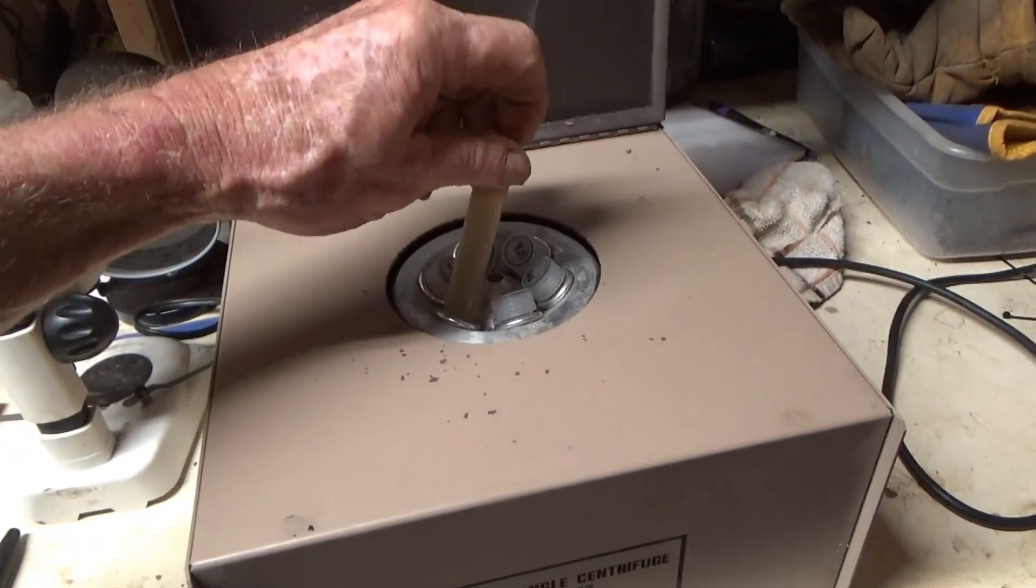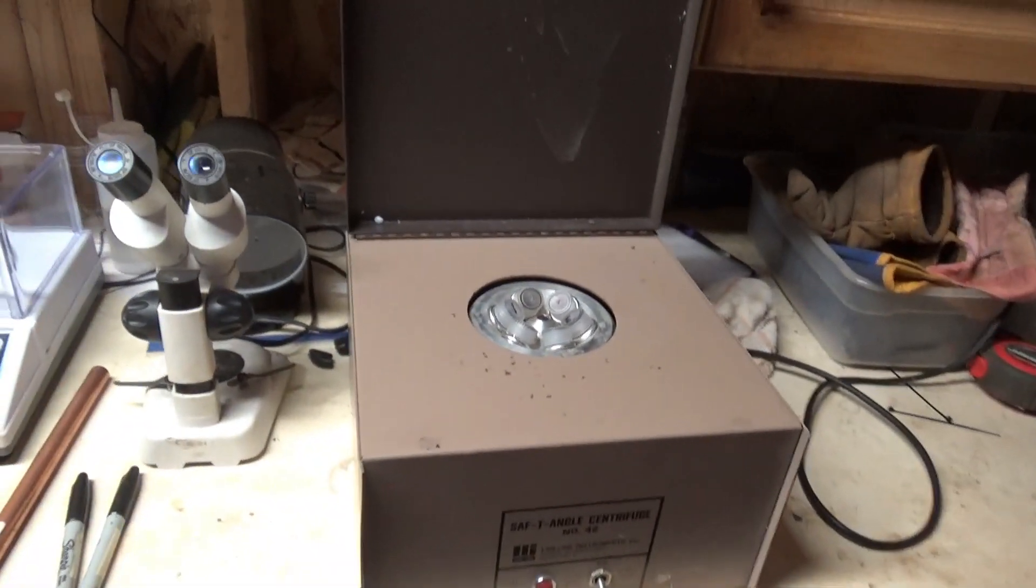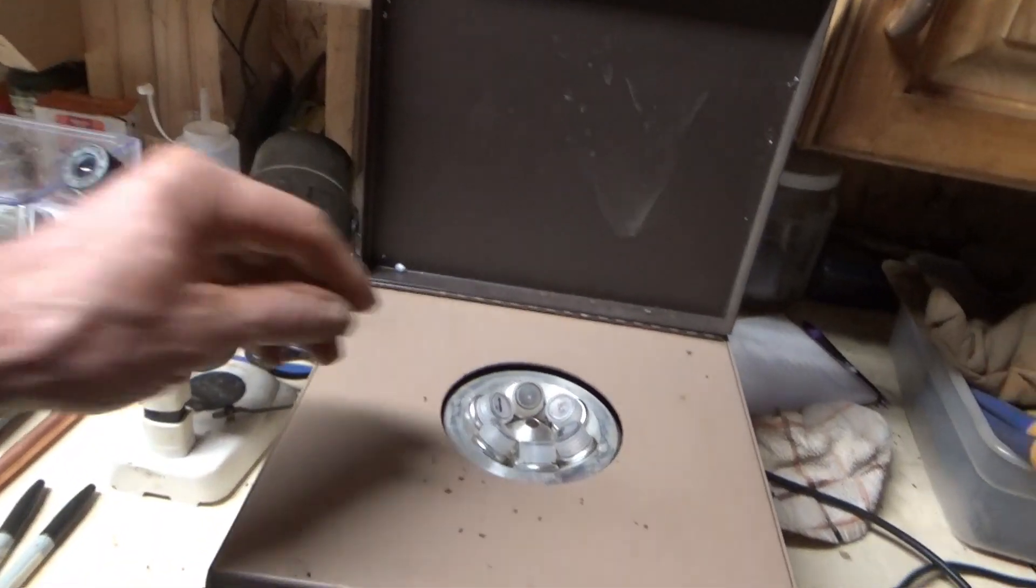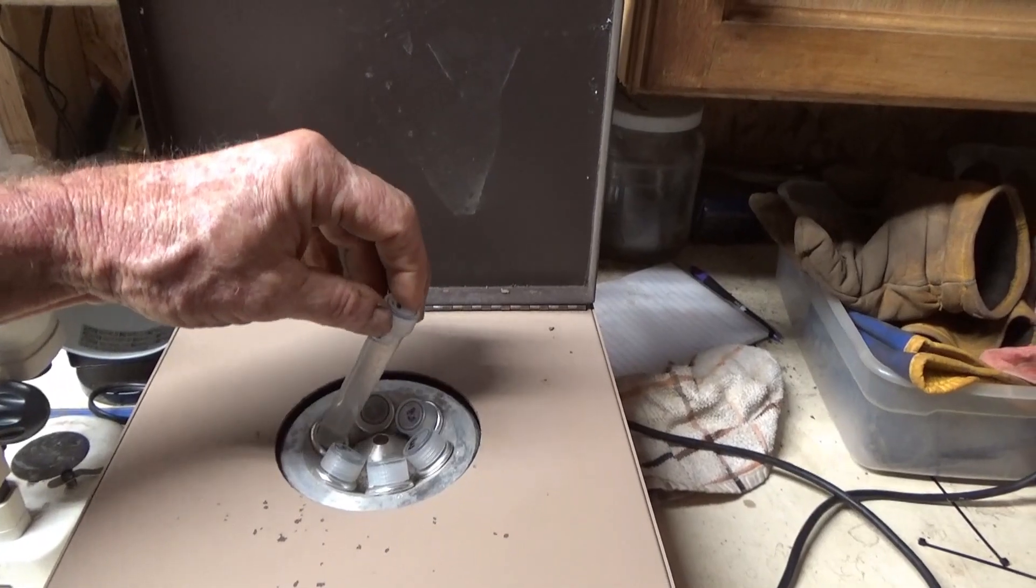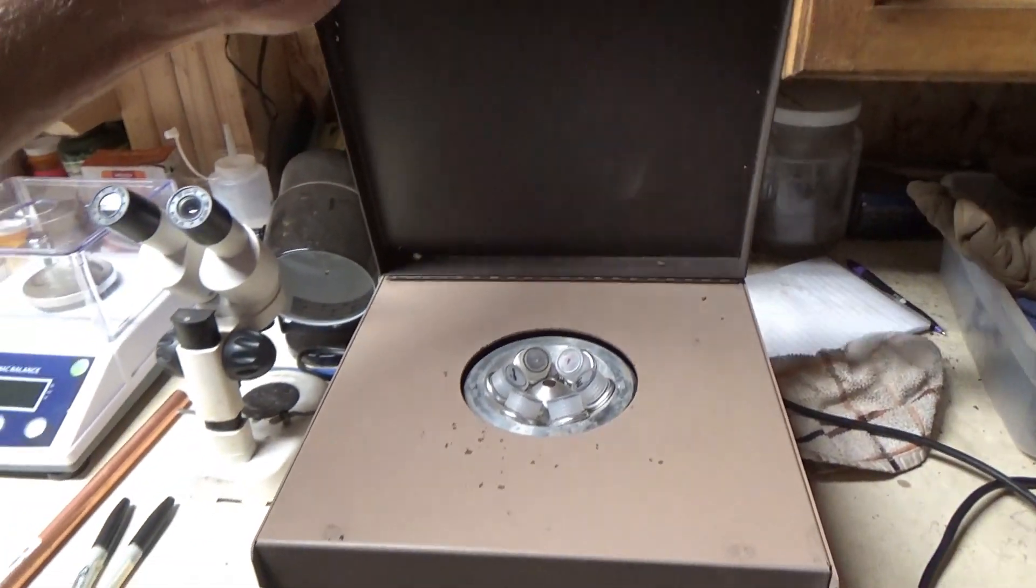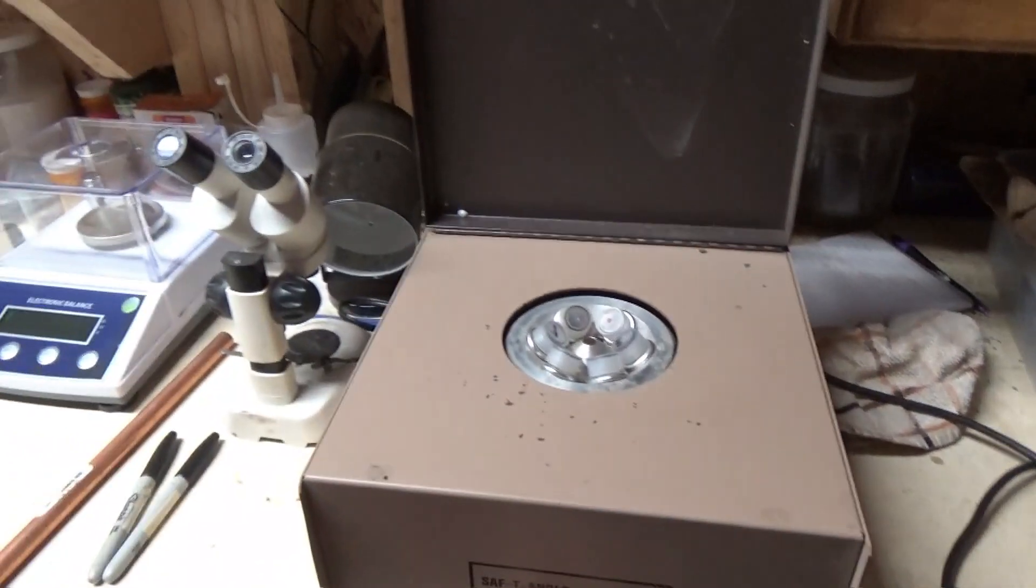The centrifuge spins at a high speed and it's in many ways a lot more efficient than filtration because you don't need filter papers or anything like that. You just take the container, stick it in there, spin it and it turns clear.